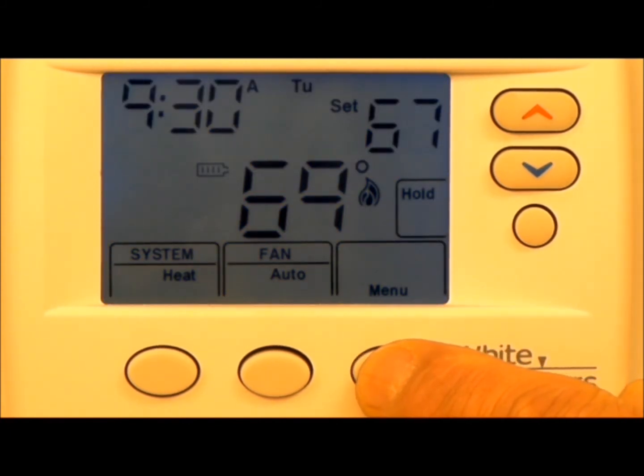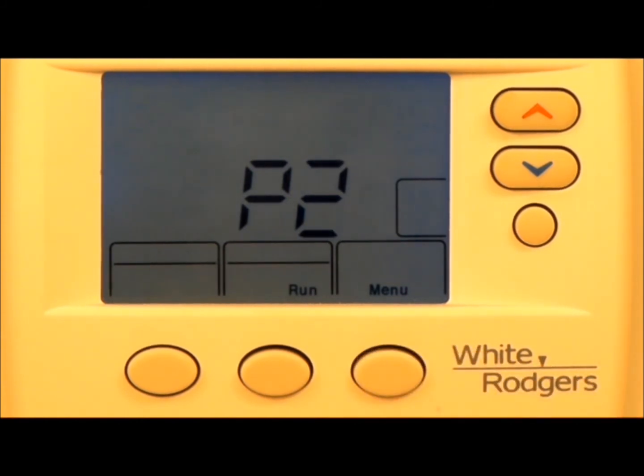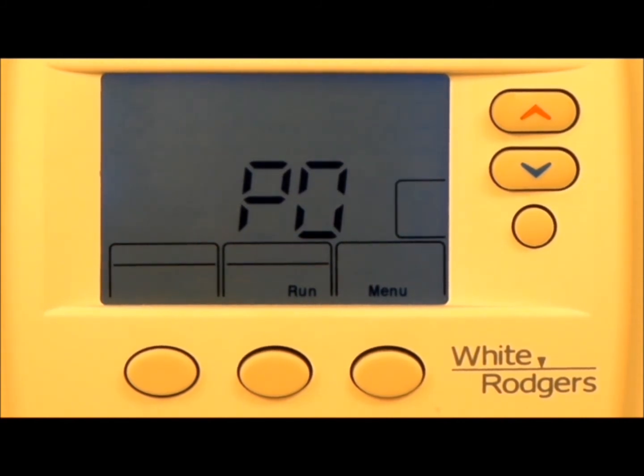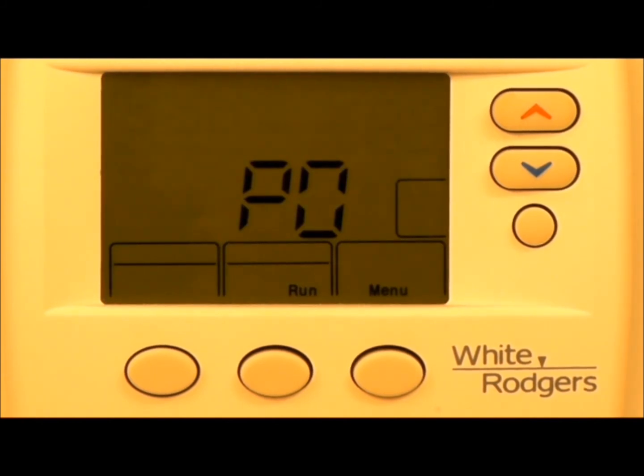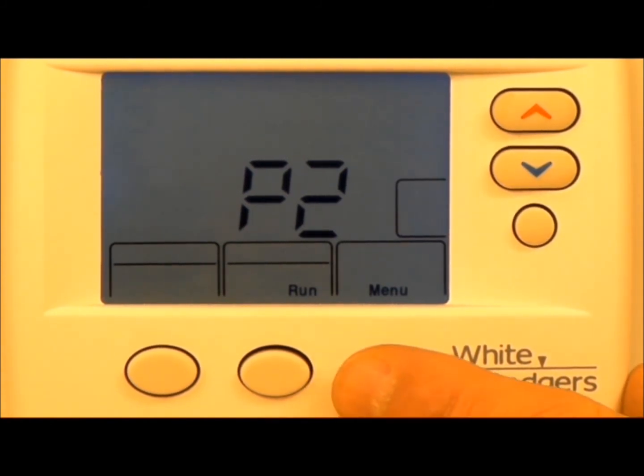The first feature that the thermostat is going to show you is what's called the programming feature. Right now the thermostat is defaulted with what we call a 5 day, 2 day. That is why it's called P2. You have the option of what they call a 5 day, 1 day, 1 day. What P3 will do is break up Saturday and Sunday as individual days. You have the option of P0. P0 means there is no program running whatsoever. You as a homeowner have to physically come over and manually make your changes. For most homeowners, the easiest method of programming will be P2. To cycle through the rest of the features, I hit the menu button.